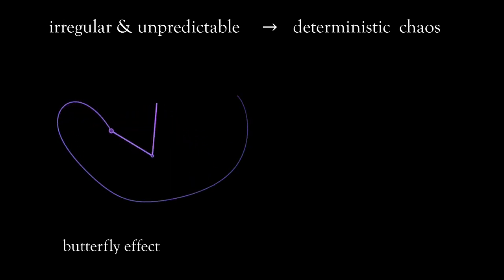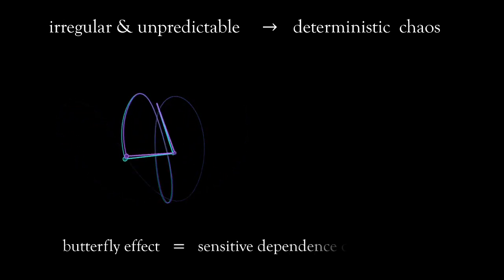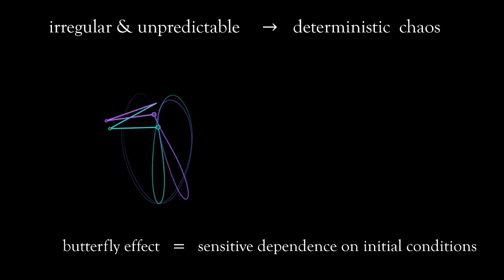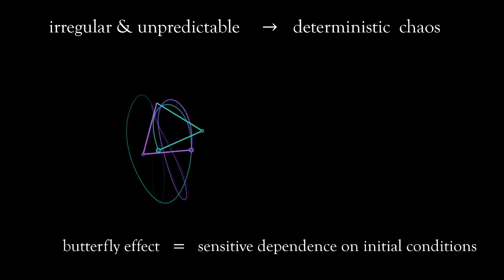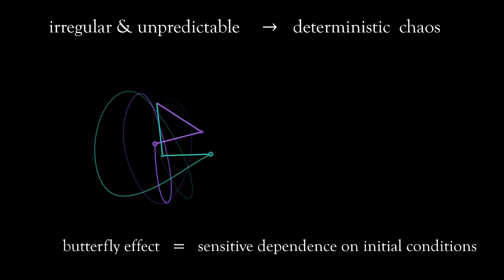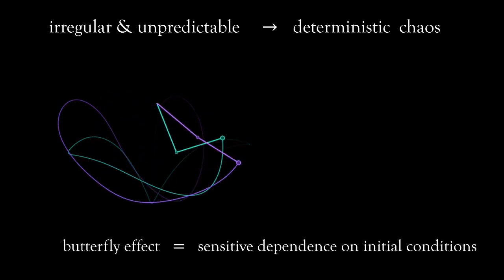But a more precise way to describe this is sensitive dependence on initial conditions, which means that exactly what the system does depends very sensitively on how it started.